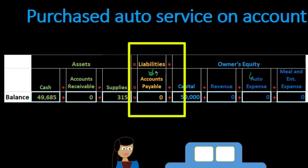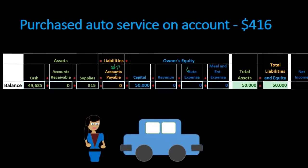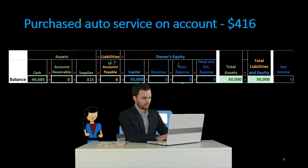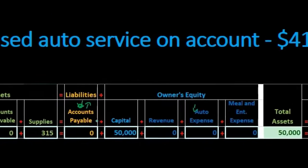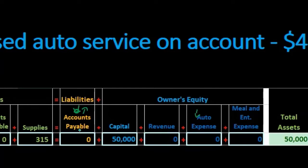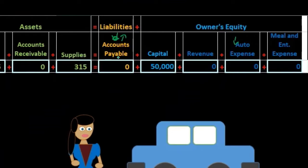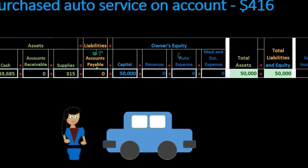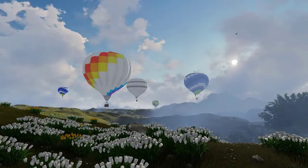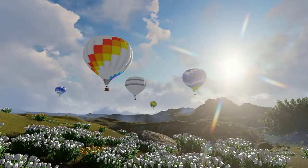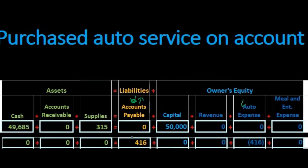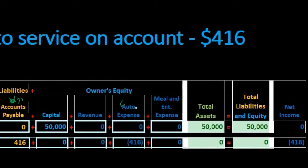Accounts payable is going up, not down. We know this for a couple of reasons: if auto expense is bringing down equity on the right side of the equal sign, and accounts payable is the other account affected — also on that same side — it needs to go up to keep the equation in balance. We can also reason through it: accounts payable means we bought something and haven't paid for it yet. The amount we owe is going up — $416 increase in payable and $416 in auto expense decreasing equity.